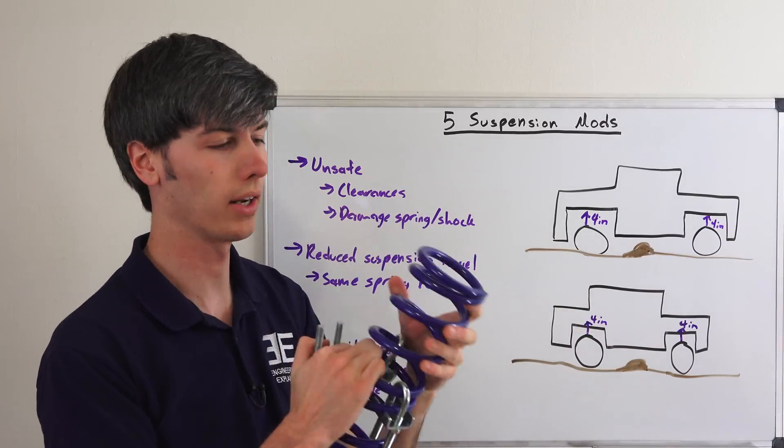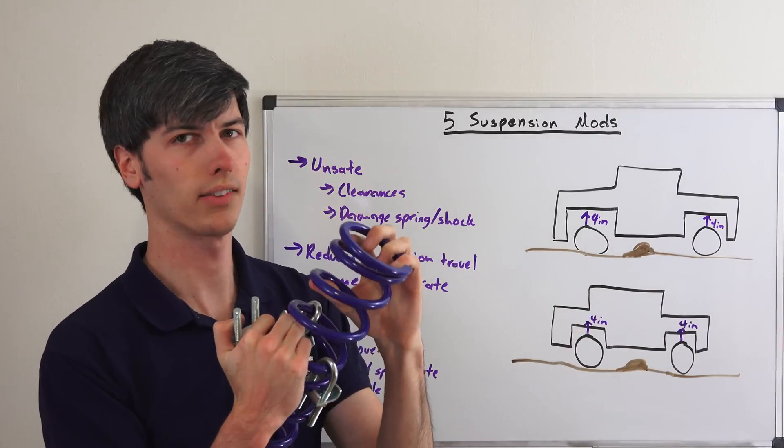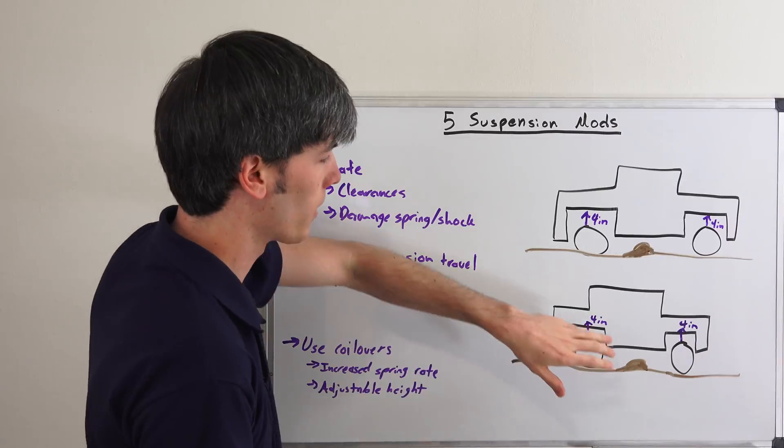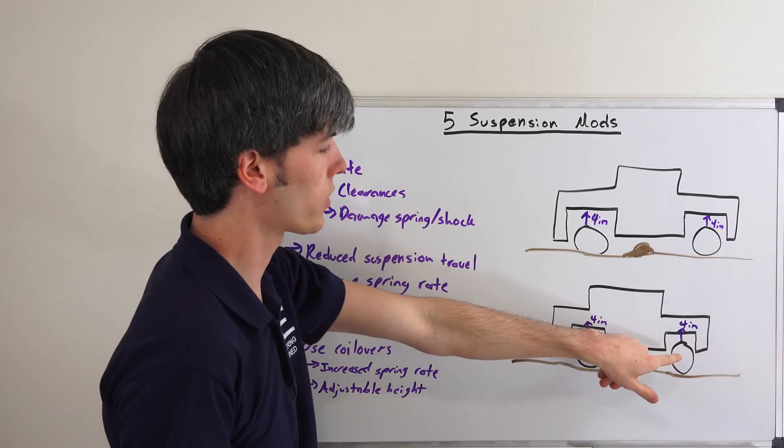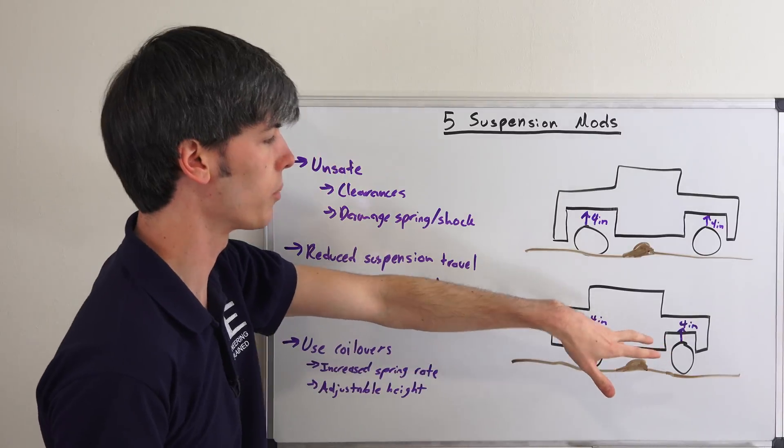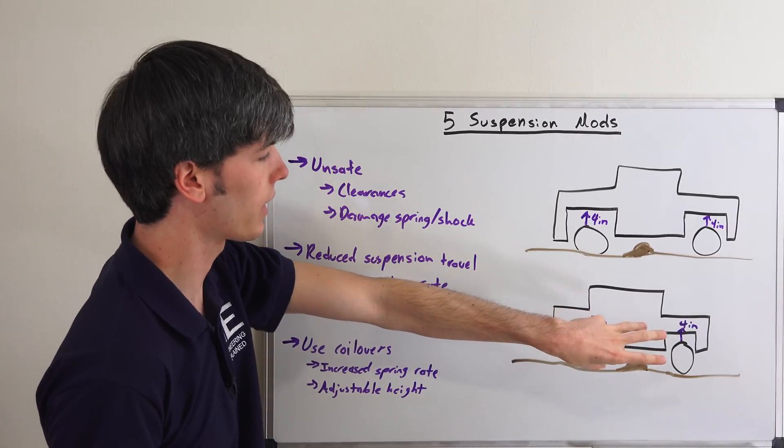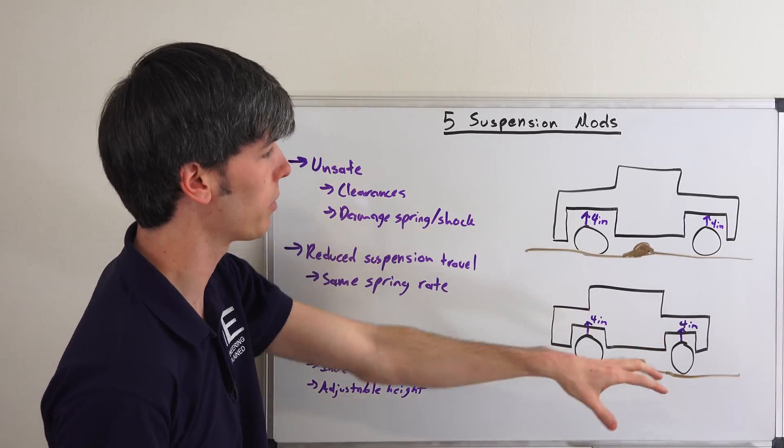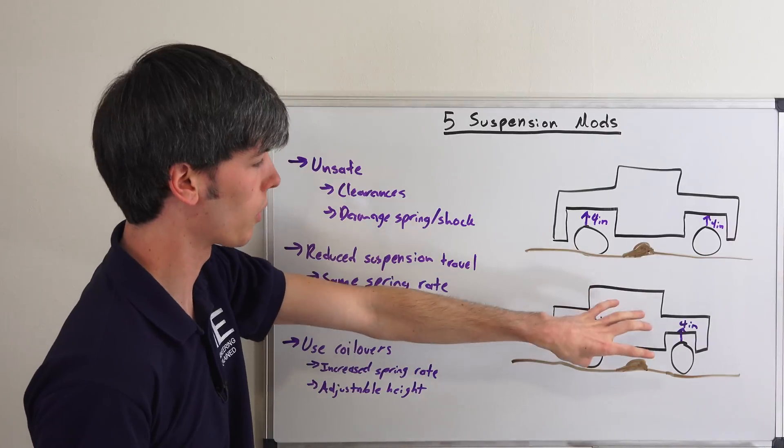But you haven't changed the spring rate. You always want to make sure the spring rate is higher if you're going to lower your car. So you have that same four inches of travel, but now your tires are going to come into contact with the wheel wells or another interference. You might hit bump stops or something like that within your car.